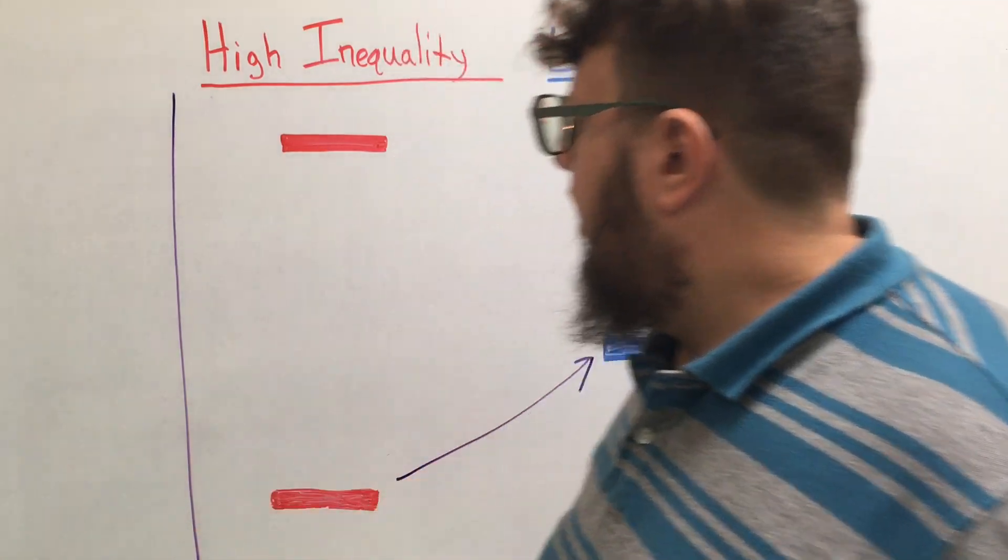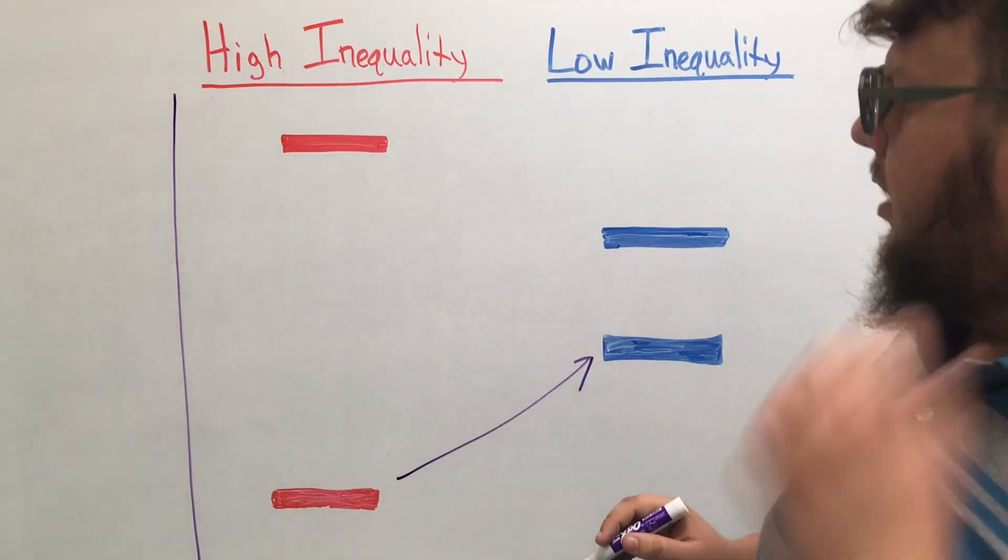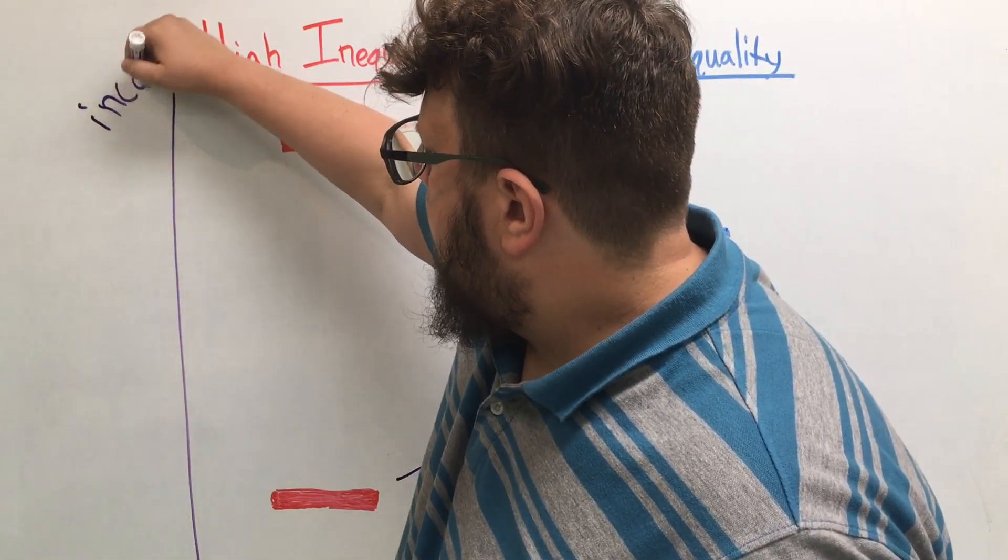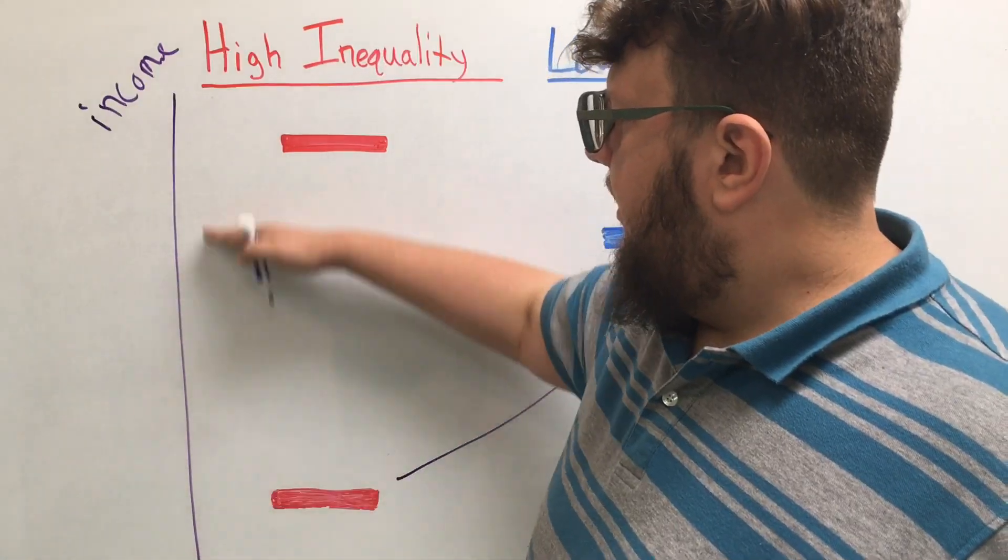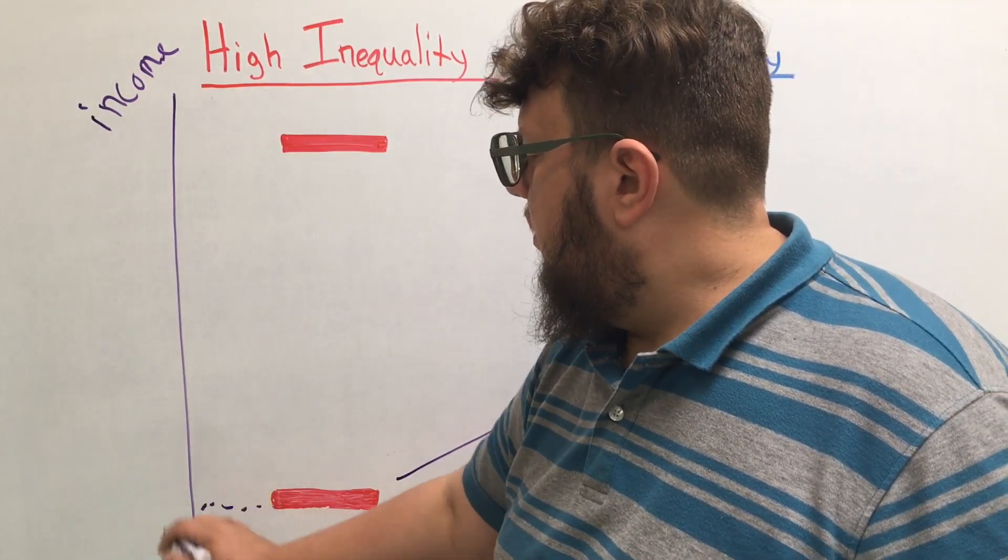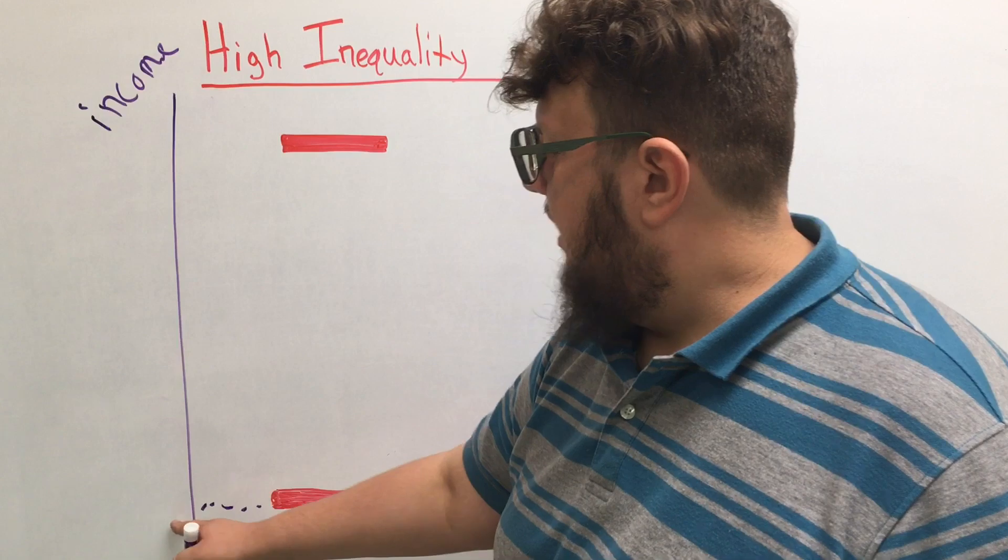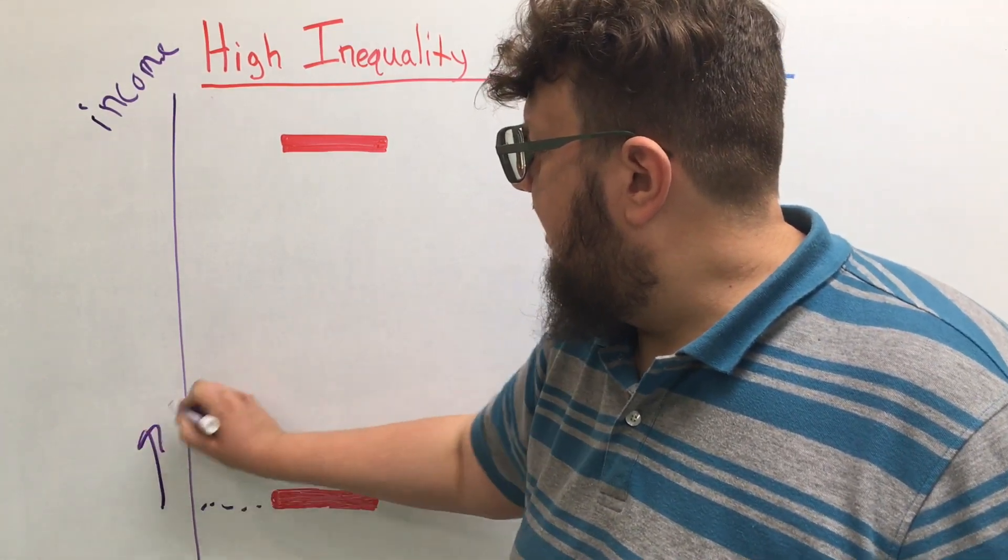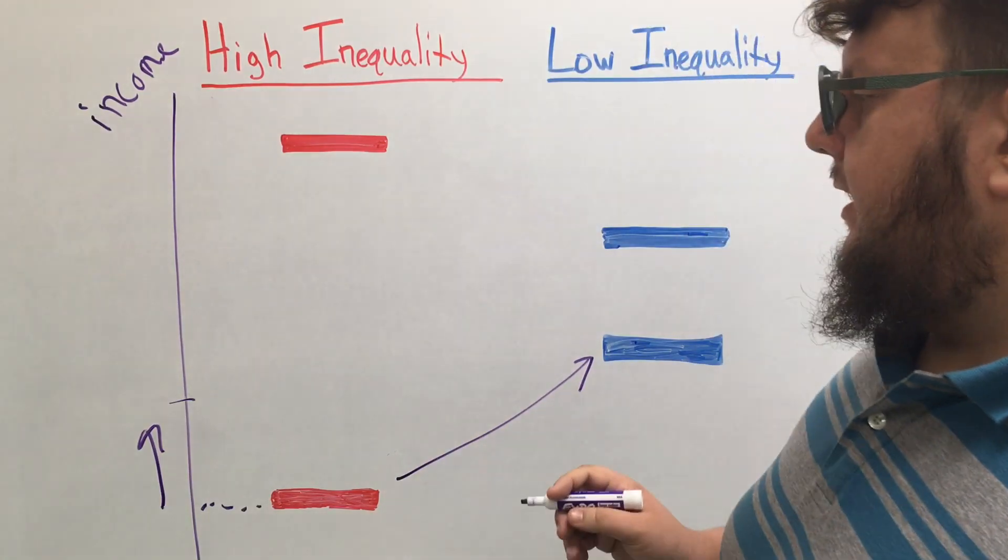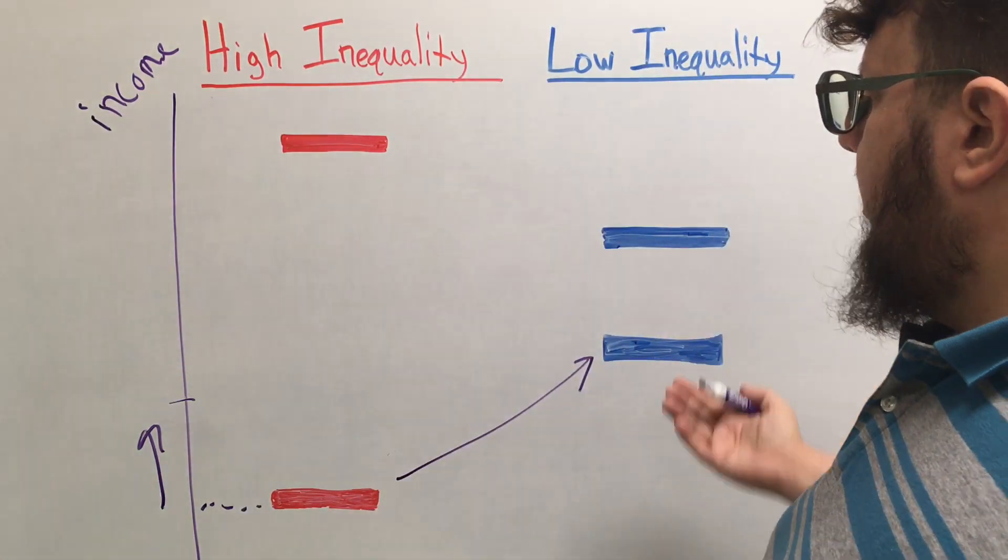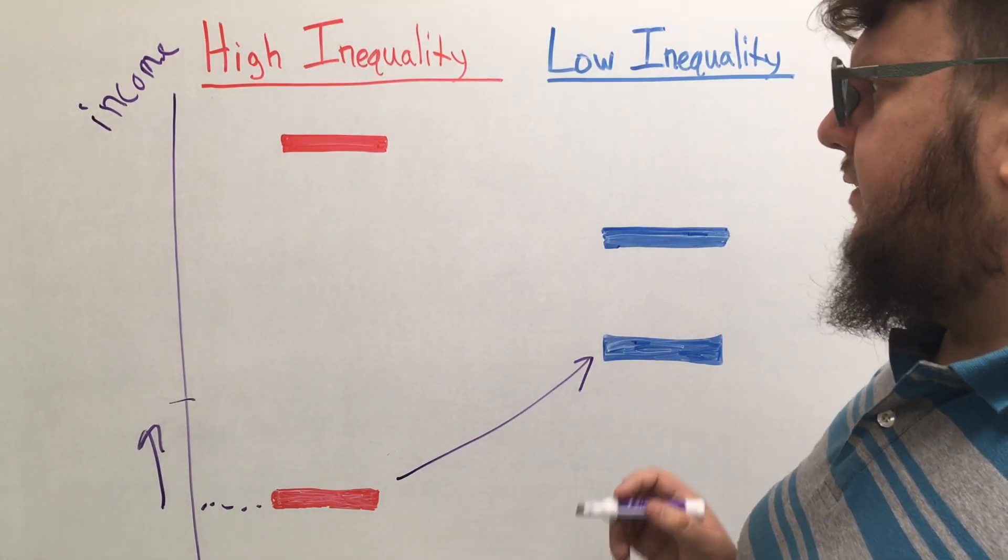Let's go ahead and turn this chart into a little axis here. On our y-axis, we're going to represent income. As you see here, you start out at this income level and then you end up at this income level, so you're going to get a gain from the migration from the high inequality nation to the low inequality nation.